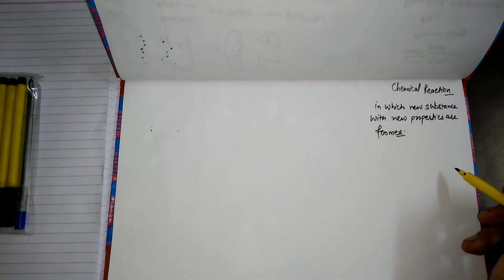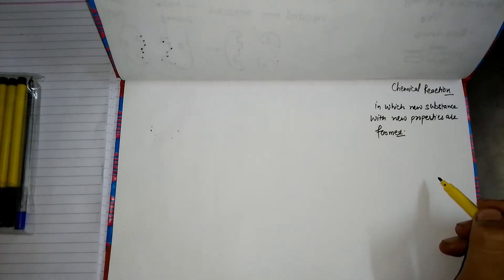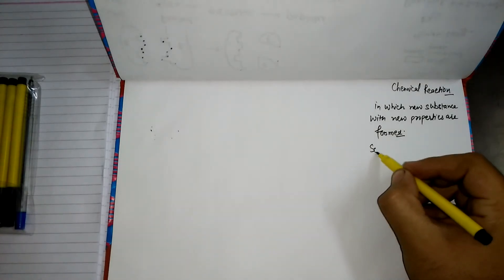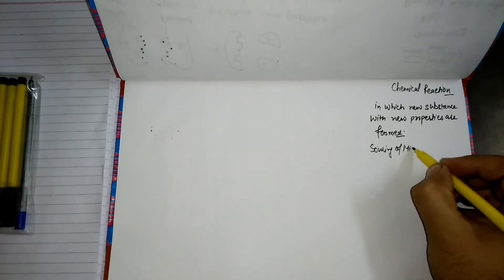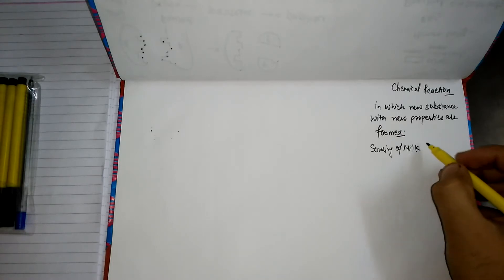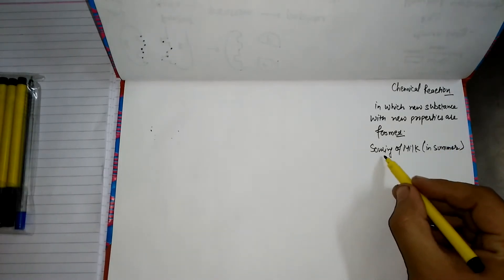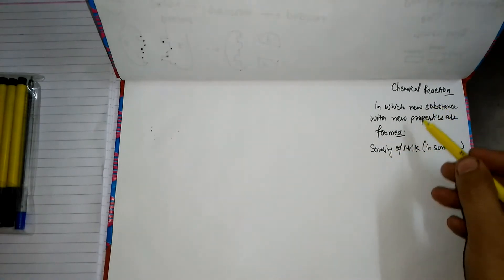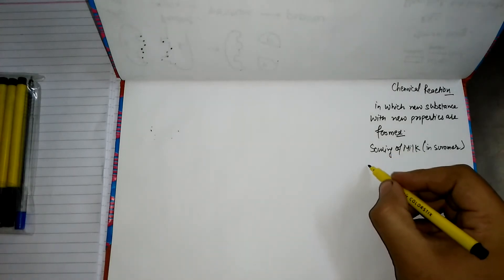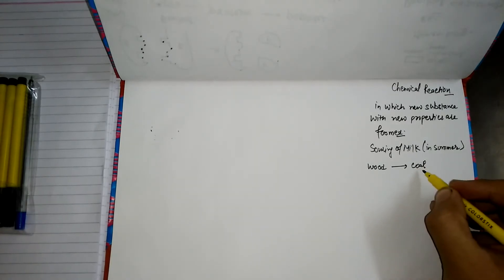Remember, a chemical reaction is not only carried out in a science laboratory. A large number of chemical reactions keep occurring in our daily life. For example, souring of milk — if we leave milk at room temperature in summer, it becomes sour. In the language of chemistry, we say a chemical reaction takes place. If we burn a piece of wood, it will turn into coal — we call that a chemical reaction.